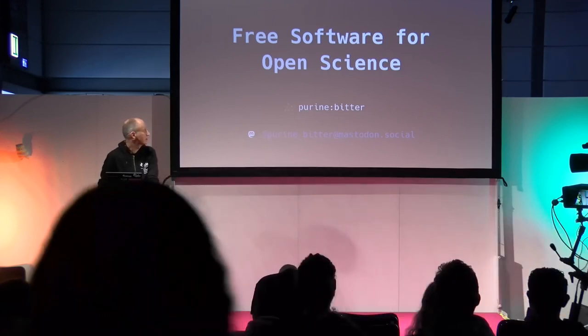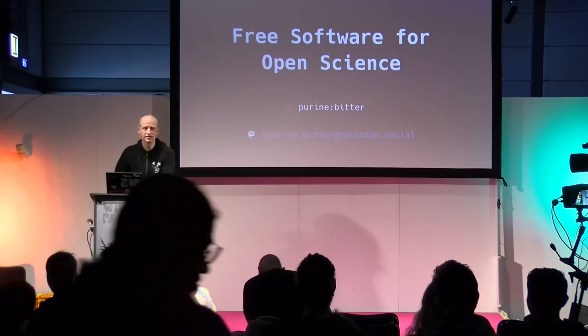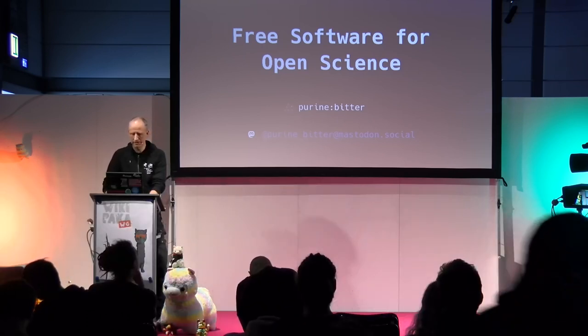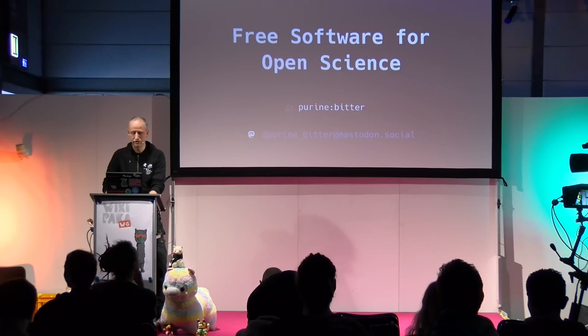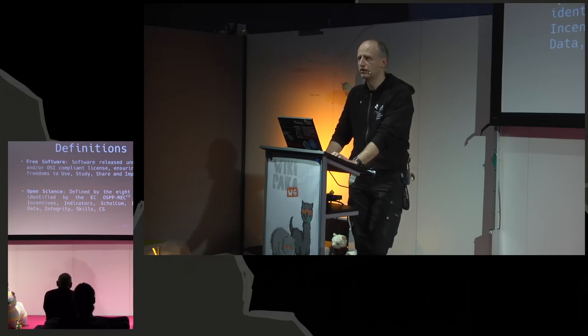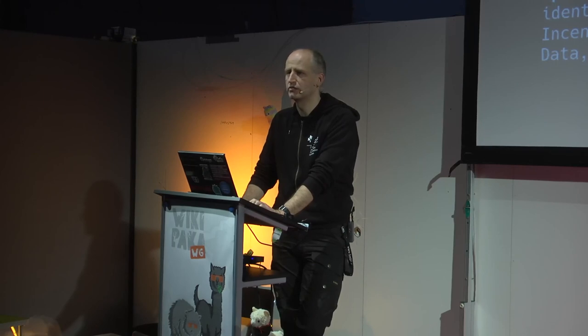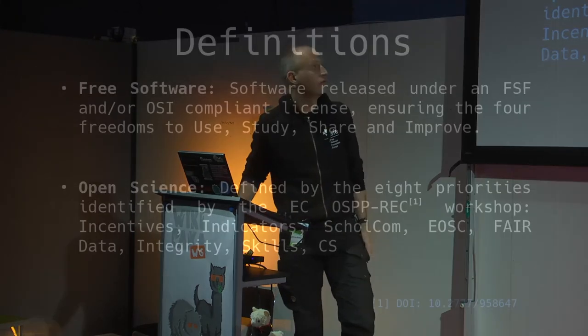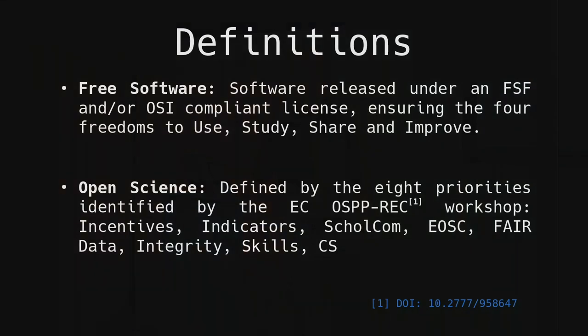The topic today is free software for open science. As I'm associated with the Free Software Foundation Europe, we should probably start with the definition. Number one: what do we consider to be free software? It's pretty much every software released under either an FSF or OSI compliant license — this is what most people also know as open source.